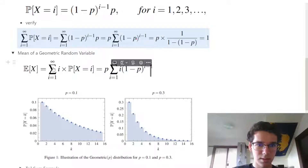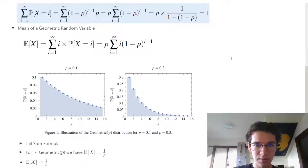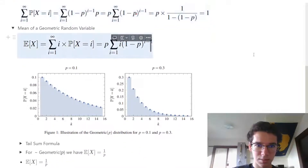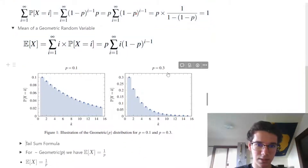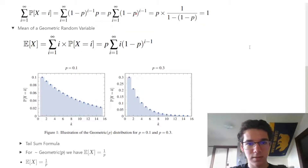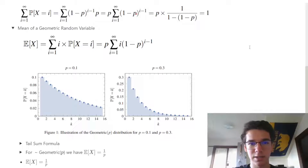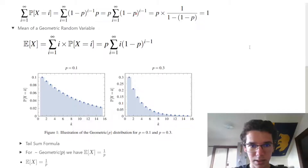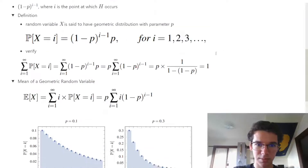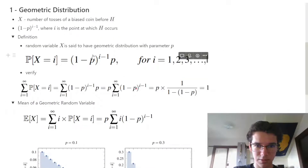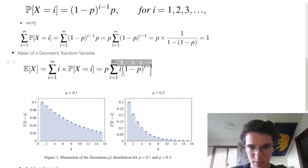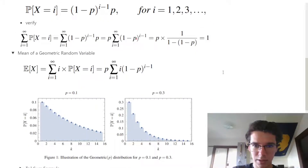Now we're going to talk about the mean of a geometric random variable. Applying the definition of expectation, we get the sum of each i times the probability that the random variable takes on that i. Substituting in the geometric PMF gives us this expression.